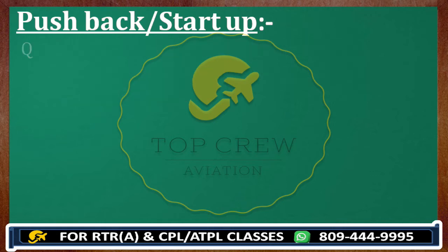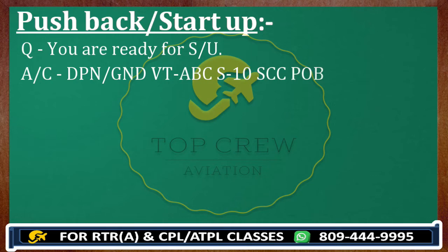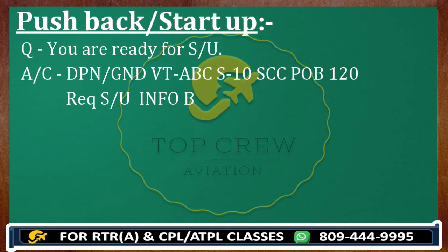Now you are going to get questions like you are ready for startup, so you have to give the startup call: Delhi Ground, Victor Tango Alpha Bravo Charlie, stand one zero, security check carried out, persons on board one two zero, request startup info Bravo. This is the format — we need to mention our position stand, security check has been done, inform about passengers on board, and request startup with info. Four things: your position (stand number), security check carried out, persons on board, and info when requesting startup.